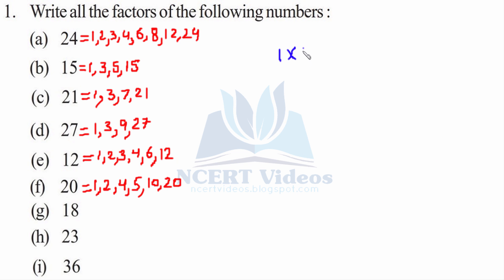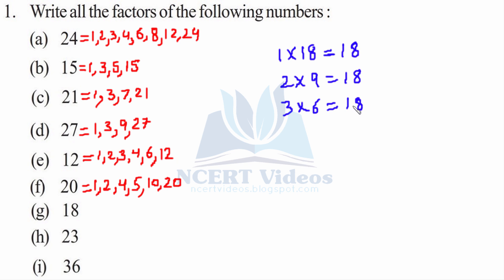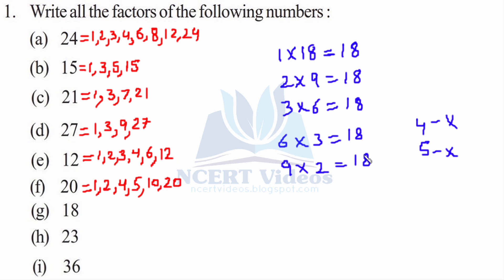For 18: 1 into 18 gives you 18. 2 nines are 18. 6 into 6 is 18. 3 times 6 are 18 again. 4 is not a factor, 5 is not as well. 6 into 3 is 18. 9 into 2 is 18 again. So these are the factors, and the last one is 18 into 1.